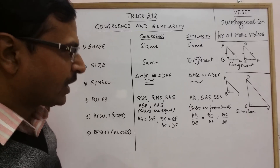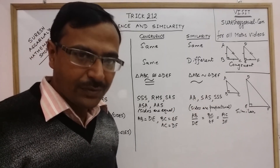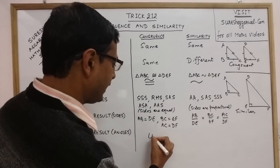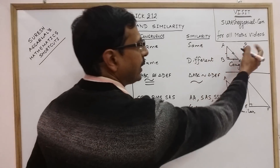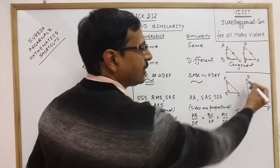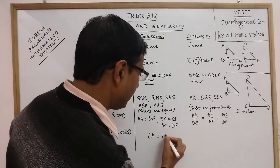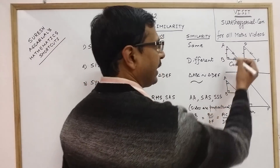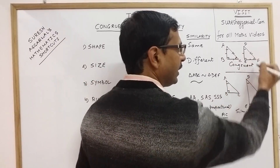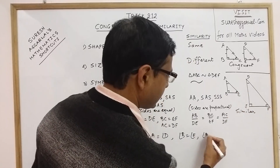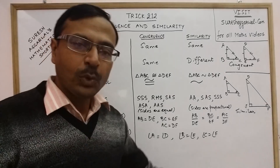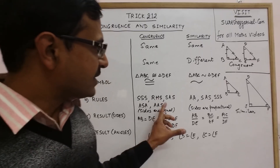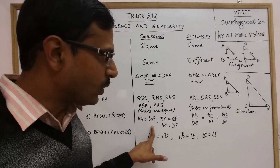Now the results on angles. Angles are always equal — they cannot be proportional. In both cases, whether congruent or similar, angle A equals angle D, angle B equals angle E, and angle C equals angle F. So in both cases, the corresponding angles are always equal. The difference lies here: corresponding sides are equal in congruence, and corresponding sides are proportional in similarity.